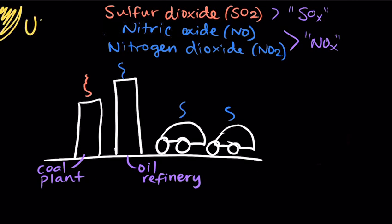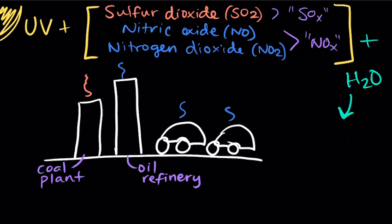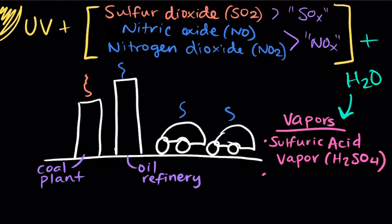When they interact with UV radiation from the sun and water molecules that are also in the air, they form different vapors. These acid vapors, sulfuric acid vapor, H2SO4, and nitric acid vapor, HNO3.